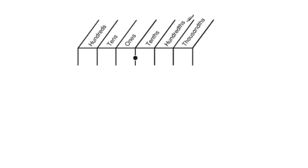So our place value chart — and we're going to use this to talk about expanded form. What is expanded form? It's naming the place values and then adding them all together, breaking them up and adding them all together. So let's say I had the number 3.453.